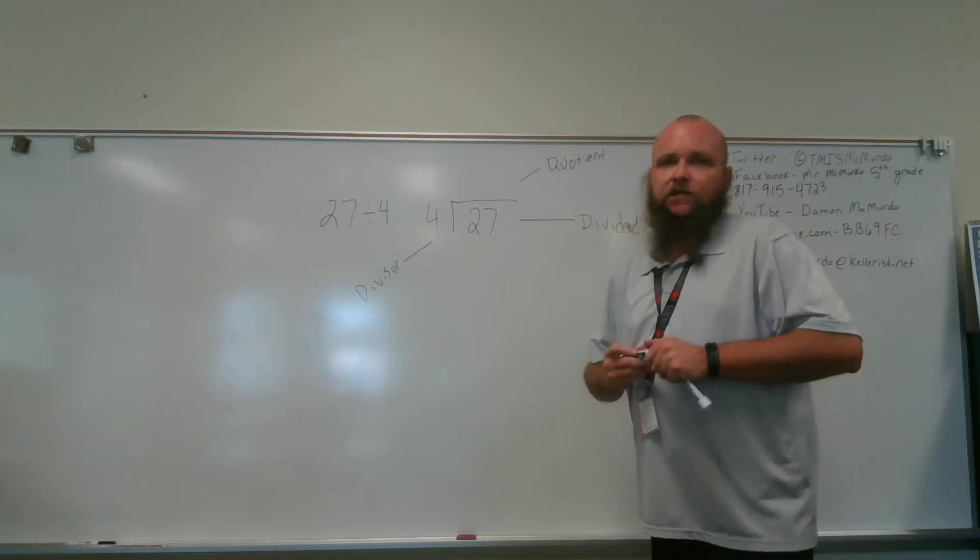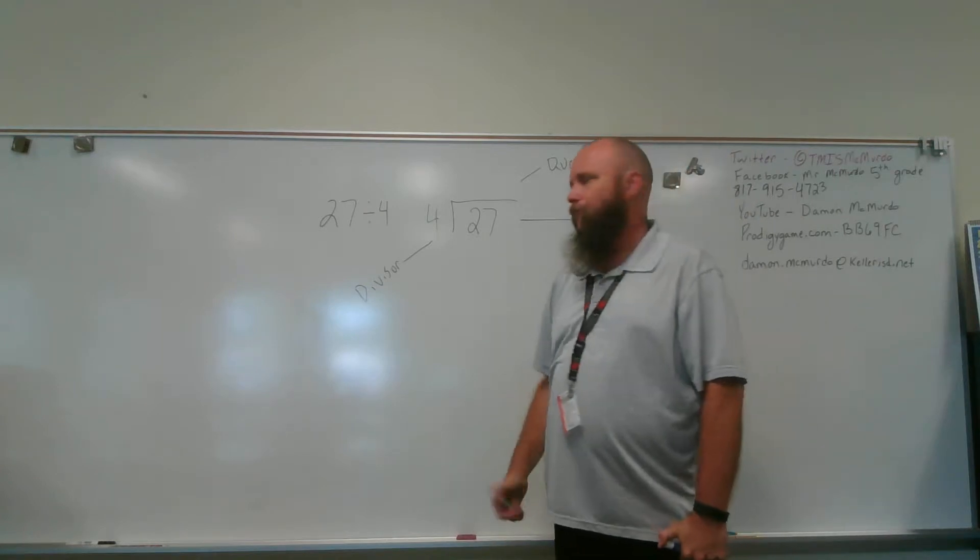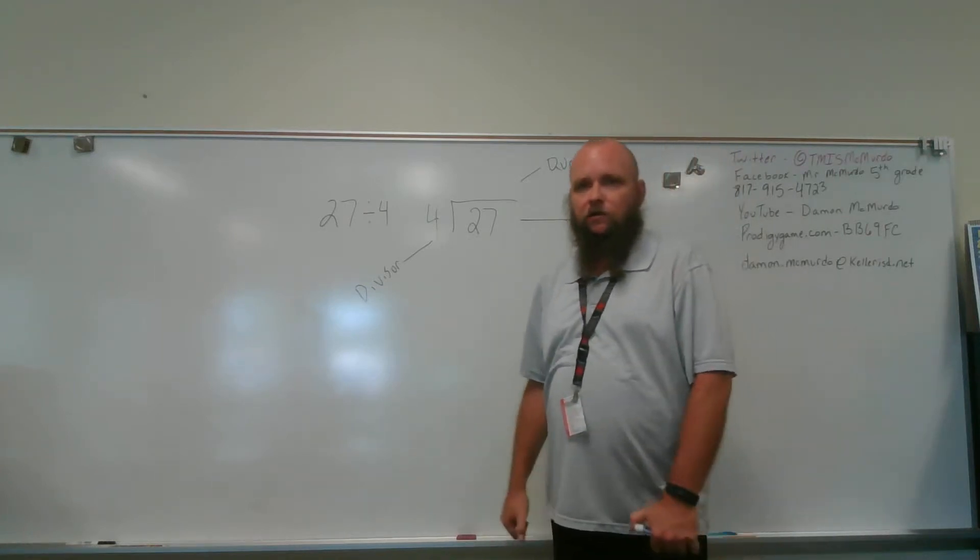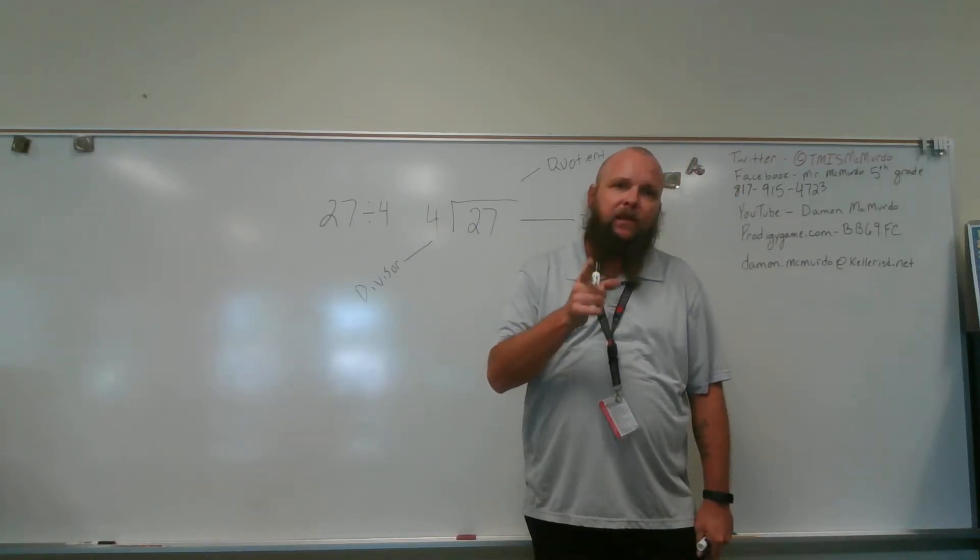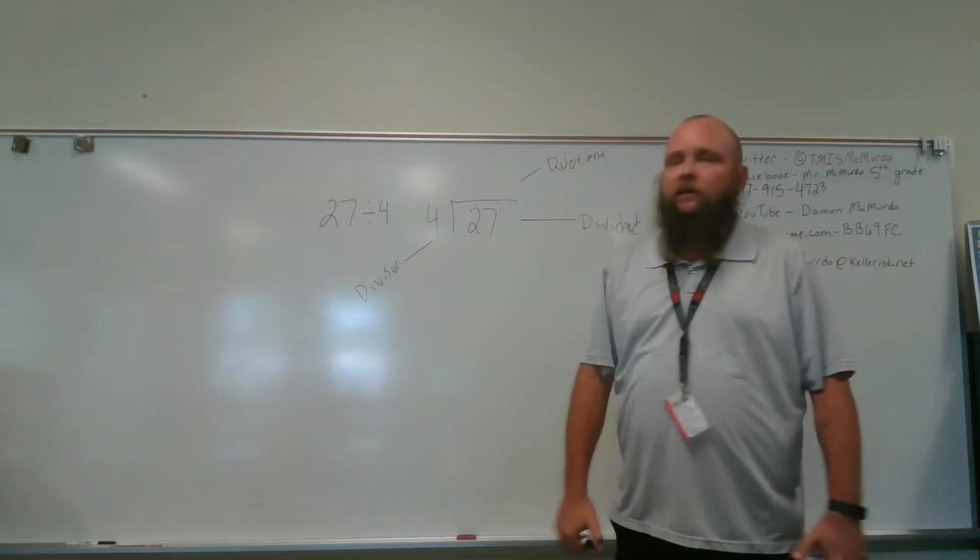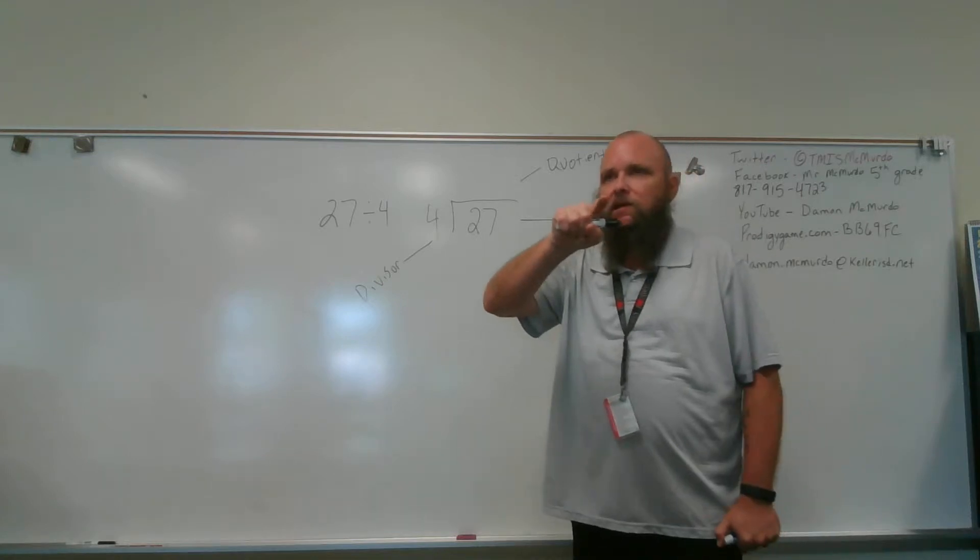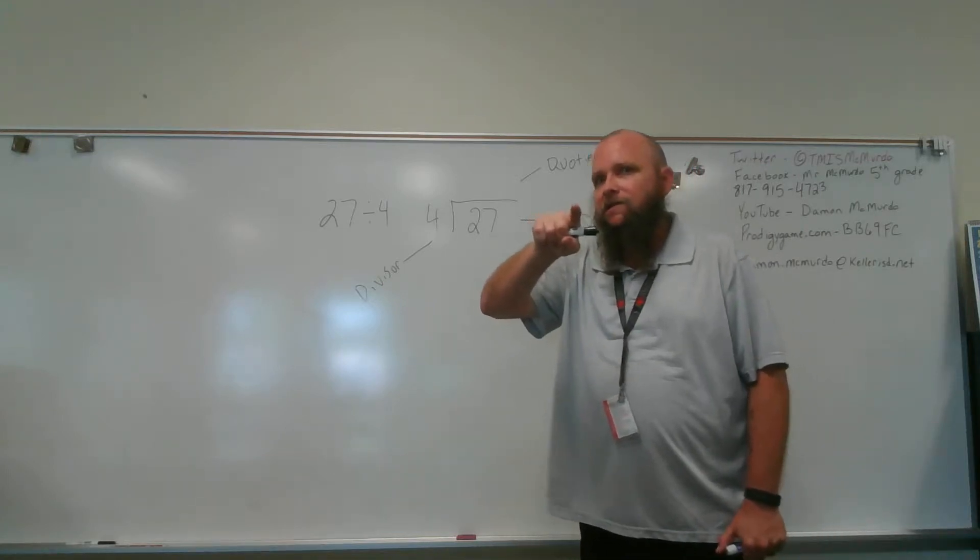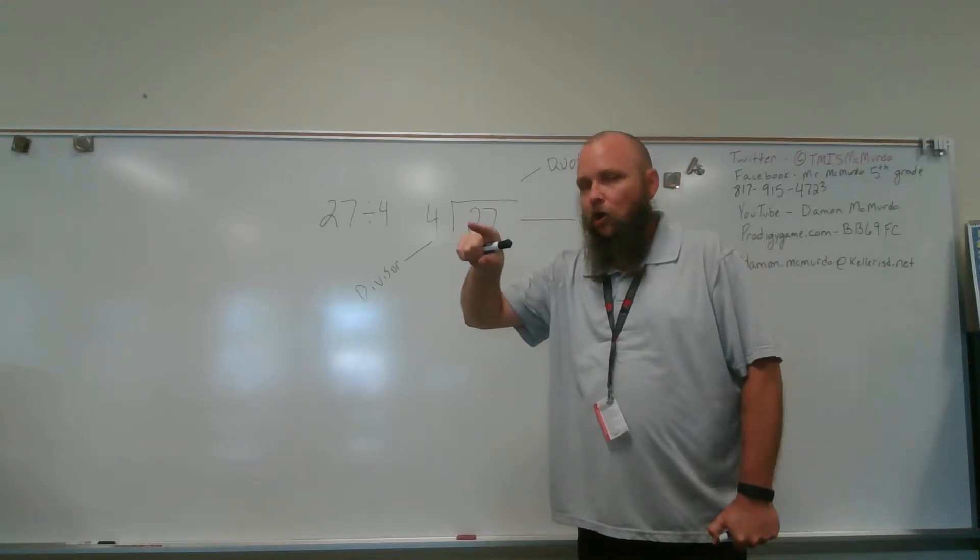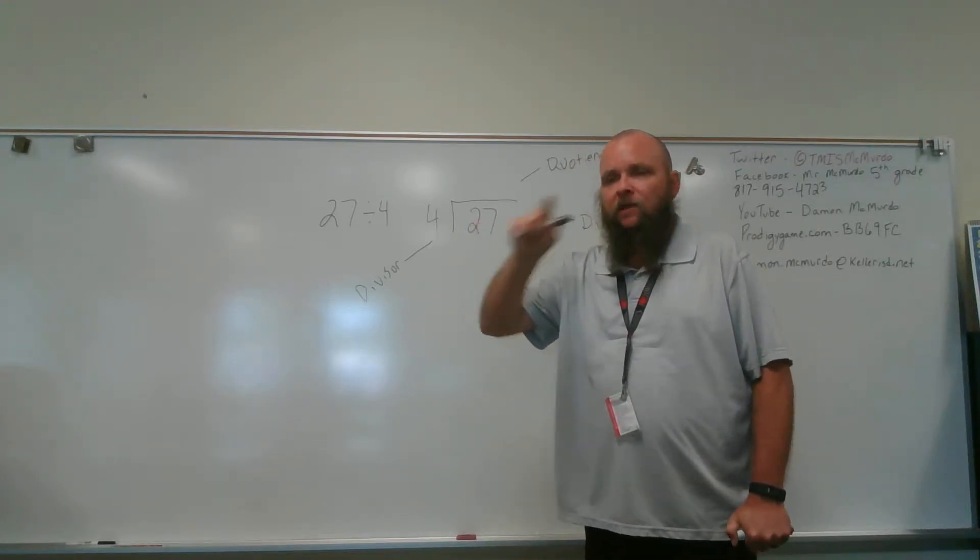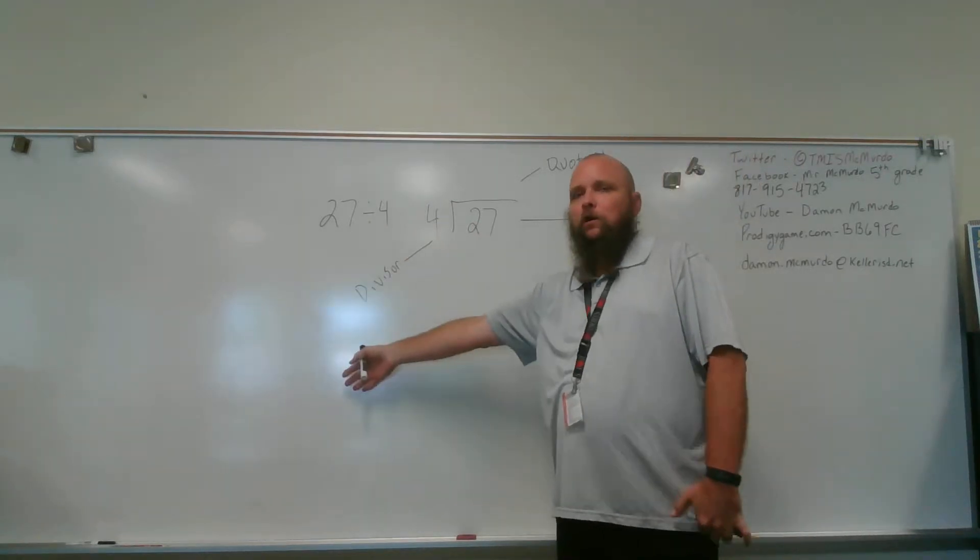If it is a single-digit divisor, it is super easy to do these, especially because I let you use your multiplication charts from your journal. So if it were me, and it is, as you can see, I'd get my multiplication chart out and I'd go 4, 8, 12, 16, 20, 24, 28. Oh, 28 is too big. We want to get as close as we can to 27 without going over 27.